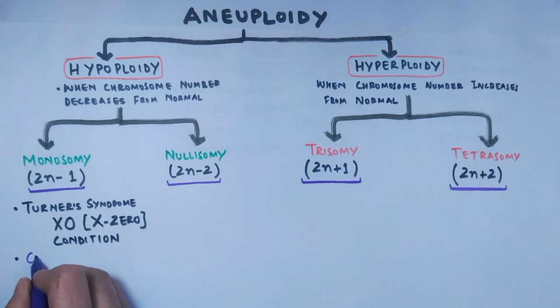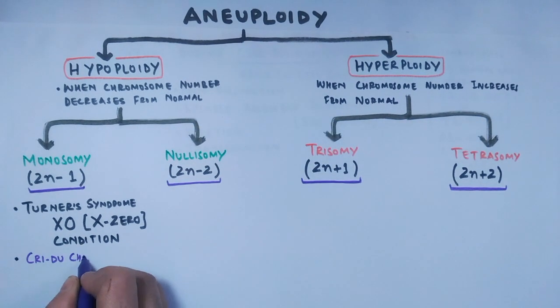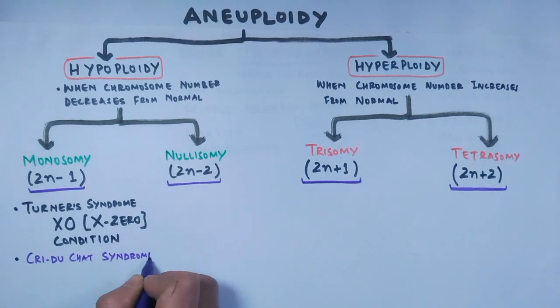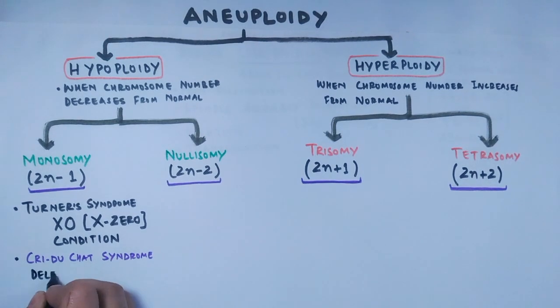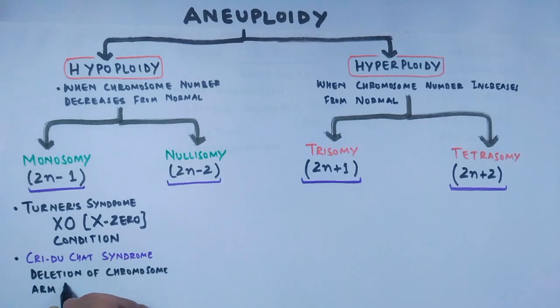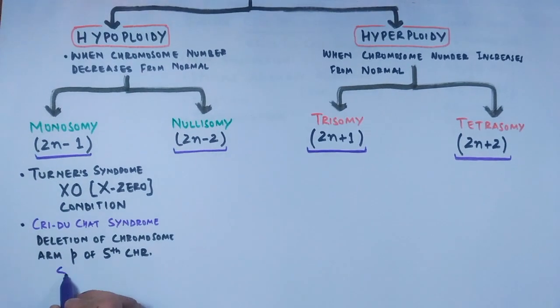Another monosomy condition is Cri-du-chat syndrome, in which there is deletion of the short arm (p) of the fifth chromosome, so it is also called 5p monosomy.